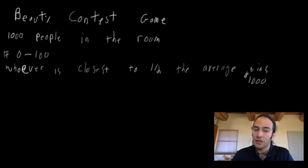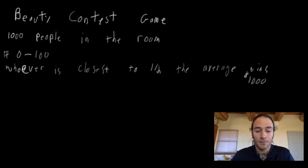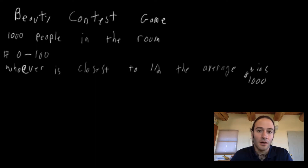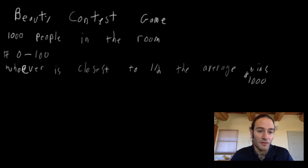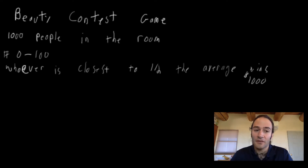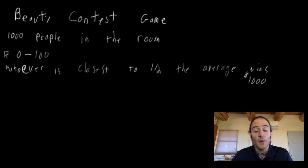We can take that to another round of iteration. All players know that it's never in anybody's best interest to pick a number above 50. So if nobody is willing to pick a number above 50, the highest that half of the average can be is 25. Everybody now knows it's never in anybody's best interest to pick above 25. So if that's the case, it's impossible for half of the average to be above 12.5. And if the highest half of the average can be is 12.5, it's never in anybody's best interest to pick a number above 6.25. We can take this all the way down, and the Nash equilibrium turns out to be everybody just picking zero.